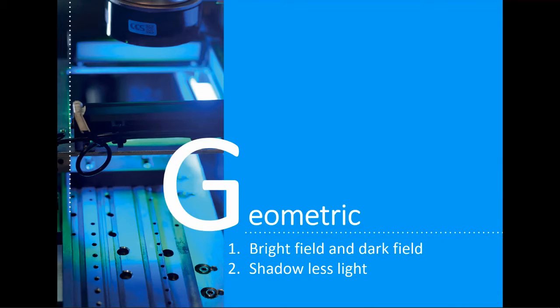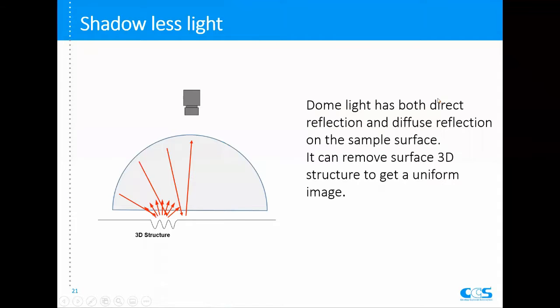For the next topic we're going to talk about shadowless light. Shadowless light is different from bright field and dark field. With bright field and dark field, the light comes from a certain direction — high angle for bright field, low angle for dark field — and the goal is to get good contrast on surface defects or surface transitions. With shadowless light, instead of light from one direction, we need light that comes from all different angles — low angle, middle angle, and high angle — to create a cloudy day illumination. The reason we need this kind of lighting is to remove surface unevenness or texture.